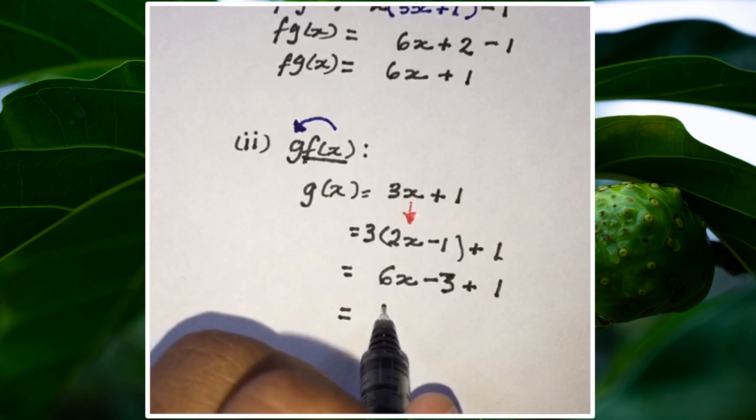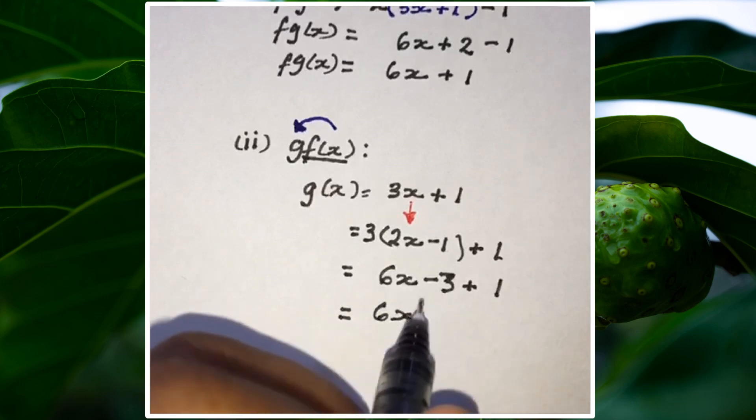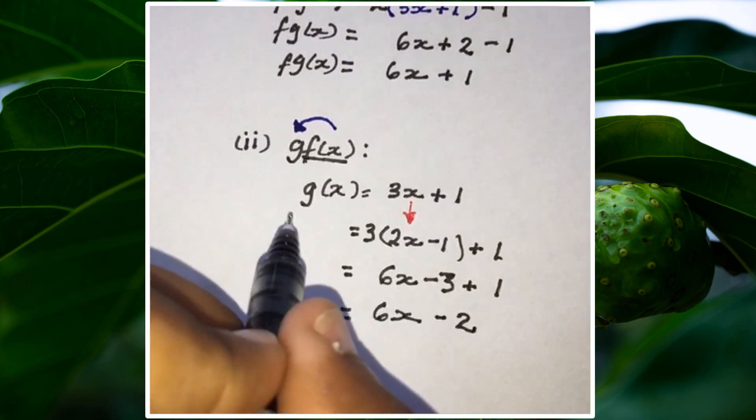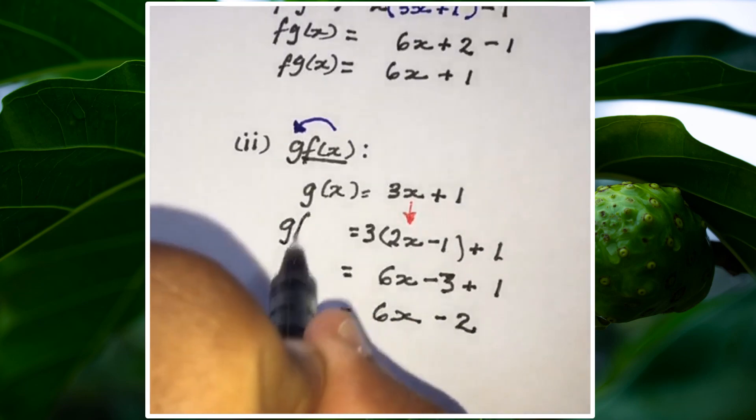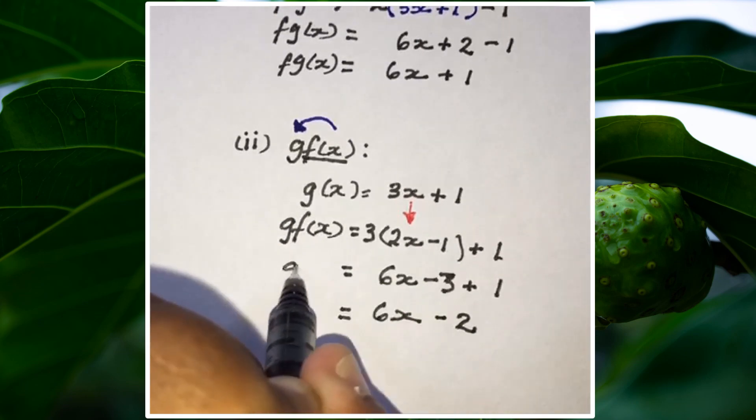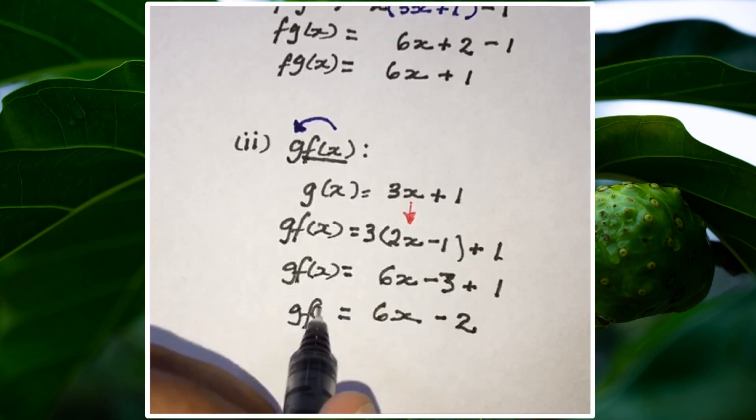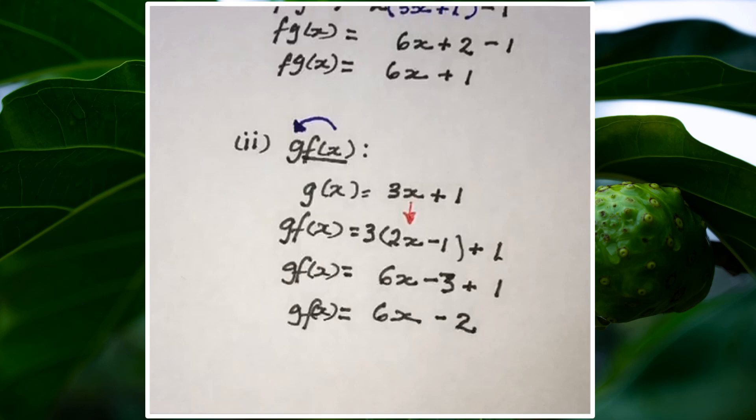So we'll have 6x. And minus 3 plus 1 gives us negative 2. So g(f(x)), the composite function, is going to be equal to 6x - 2.